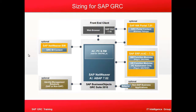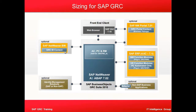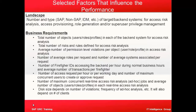Before we get into sizing, let's revisit the architecture. We have Netweaver 7.0 EHP2. The components here are Access Control, Process Control, and Risk Management, along with the different RTA plugins. These are the end users who are accessing the system. This is the architecture that we are going to size.